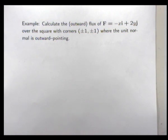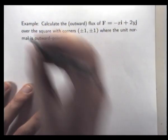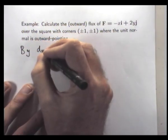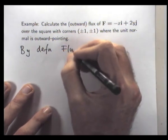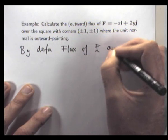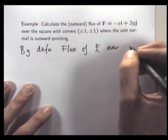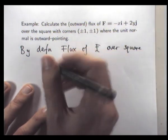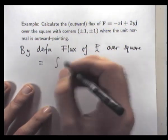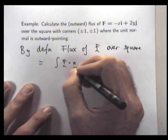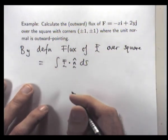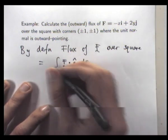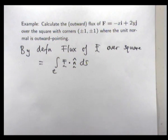This is a special example just for coming to this lecture today. So by definition, the flux of F over, say, the square, it's just the following integral. Okay, so let's denote the boundary of the square by curly C.